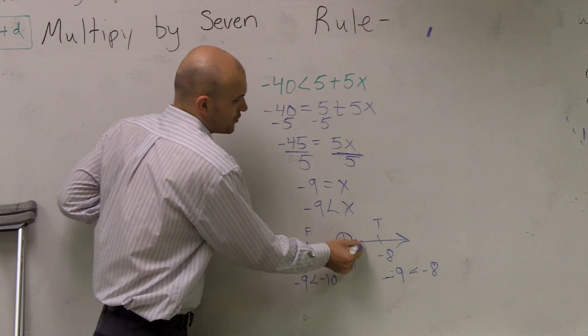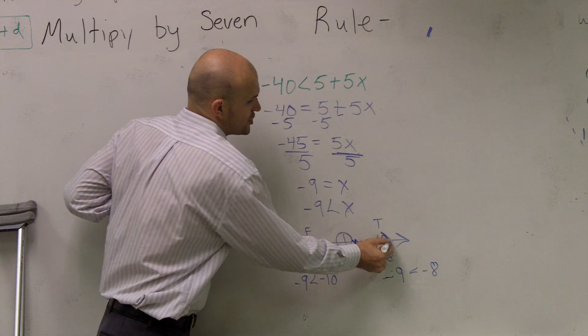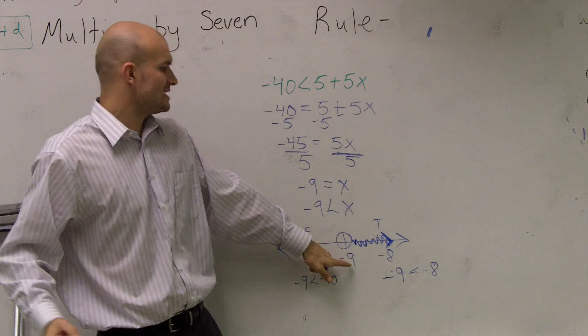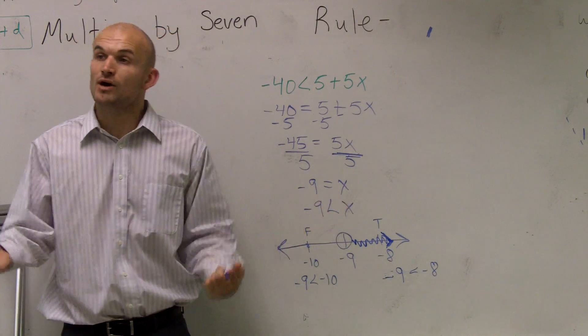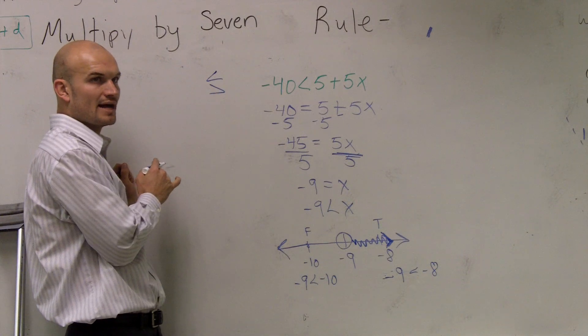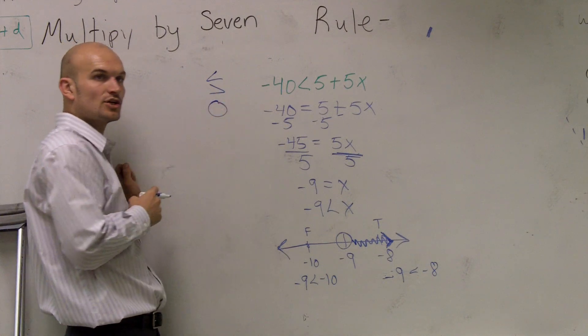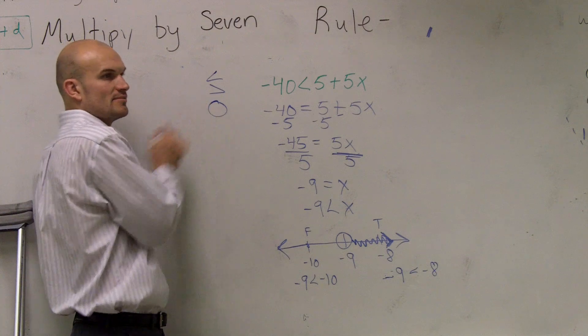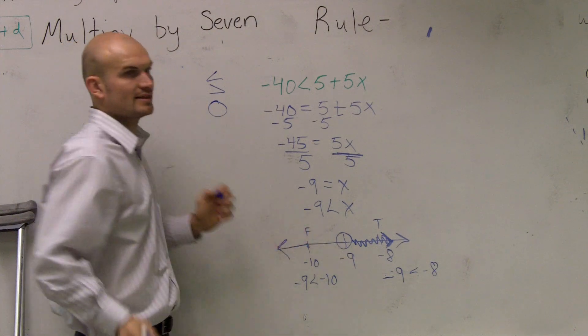So, remember, we graph towards where it's true. Now, you guys could test, is -9 less than -9? But one thing you guys can remember is a less than or a greater than is always going to be false. Meaning, it's always going to be an open dot. So, we'll leave it like that.